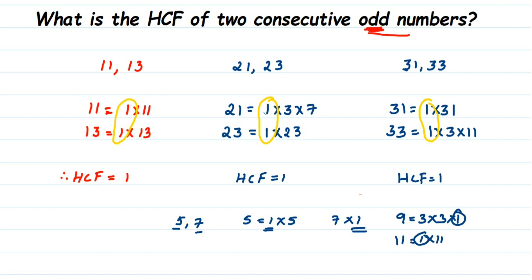So the highest common factor of any two consecutive odd numbers is always 1. Remember this — it can be a one-mark or two-mark question. For two marks, take random examples and show that the HCF is always equal to 1. I hope this is clear. If you have any doubt, drop a comment. Thank you for watching.